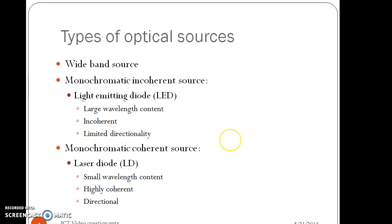There are various types of optical sources such as wideband source, monochromatic incoherent source, and monochromatic coherent source. Monochromatic source means a source which emits a wavelength. Incoherent source emits photons of different phase whereas a photon emitted when all are in same phase is called a coherent source of light.